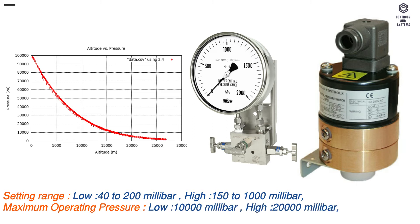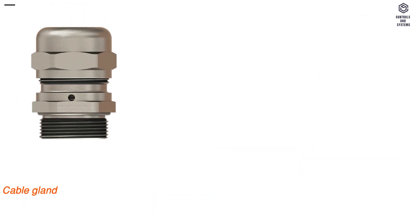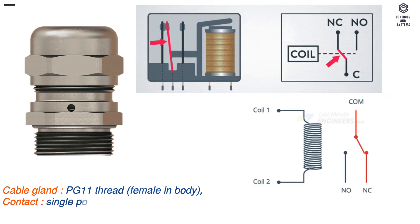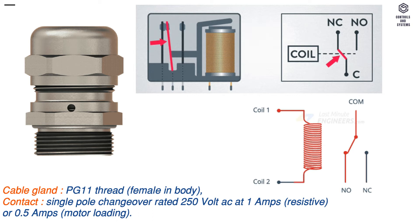Cable gland: PG-11 thread, female in body. Contact: single pole changeover rated 250 volt AC at 1 amp resistive, or 0.5 amps motor loading.